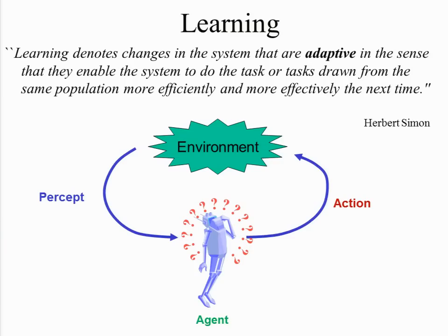A more general AI-oriented view of learning is the one Herbert Simon proposed. Think of an agent — this agent here is a robot, but it could also be the little spider we saw before. The agent interacts with its environment by acting upon it, and it makes percepts from the environment: it sees, it hears, it feels, and so on.